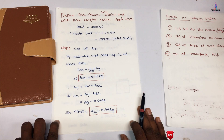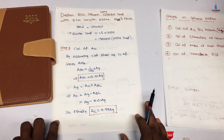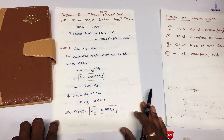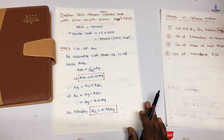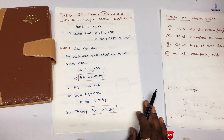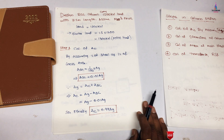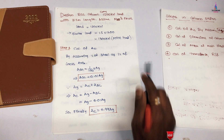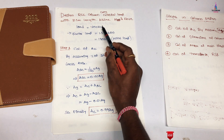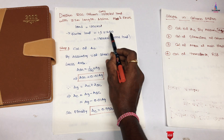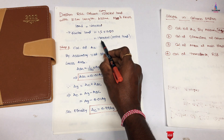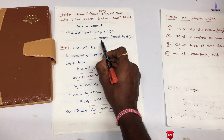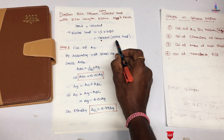Now I will explain how to design an RCC column for a 1200 kN load with a 3.5 m length, assuming M20 grade concrete and Fe415 grade steel. Before designing, we calculate the factored load: Pu = 1.5 × 1200 = 1800 kN. This 1800 kN load falls under the point loading condition.